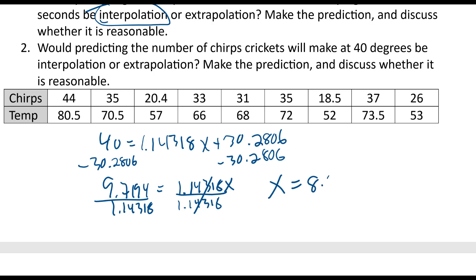And what is X going to be? I get 8.5 chirps per minute or per 15 seconds, 8.5 chirps.